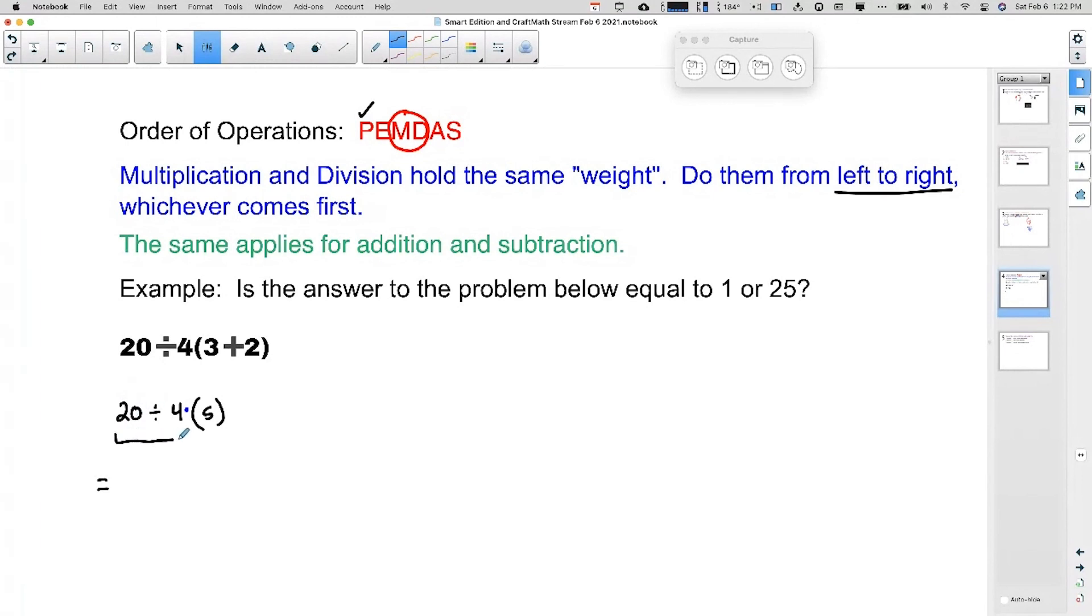So 20 divided by four, do that first. We get five and then we can multiply by five to give us that answer of 25.